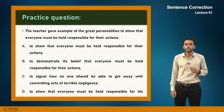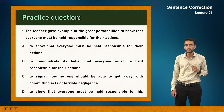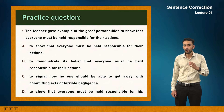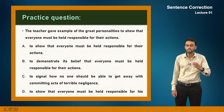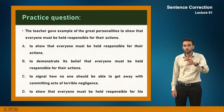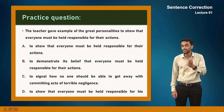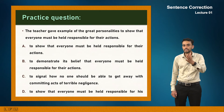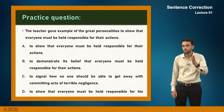Practice question: 'The teacher gave examples of great personalities to show that everyone must be held responsible for their actions.' The subject in the latter part is 'everyone', which is singular. Therefore you should use 'his or her' — not 'their'. So the D option, which uses 'his', is correct. Options A, B, and C are incorrect.